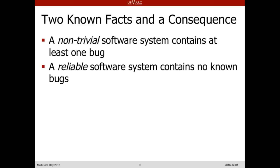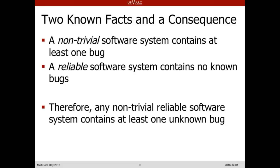Let's start with two known facts. Any non-trivial software system out there contains at least one bug. And any reliable software system contains no known bugs. So what can we infer? Any non-trivial reliable software system contains at least one unknown bug. So bugs are there — in big software systems, bugs are there. You just don't know about them.